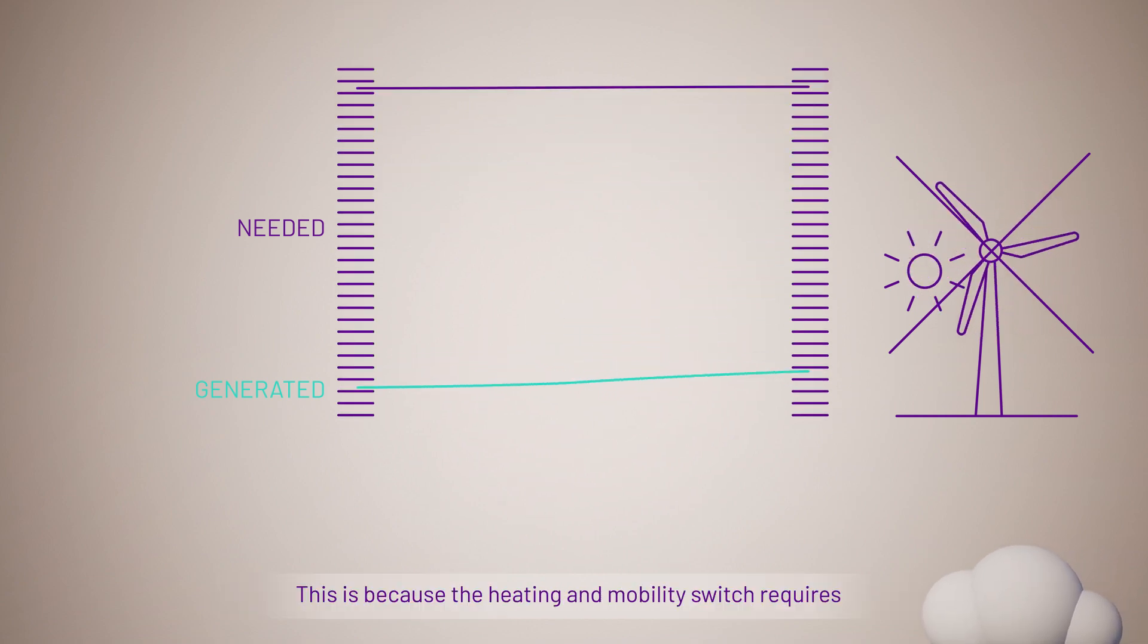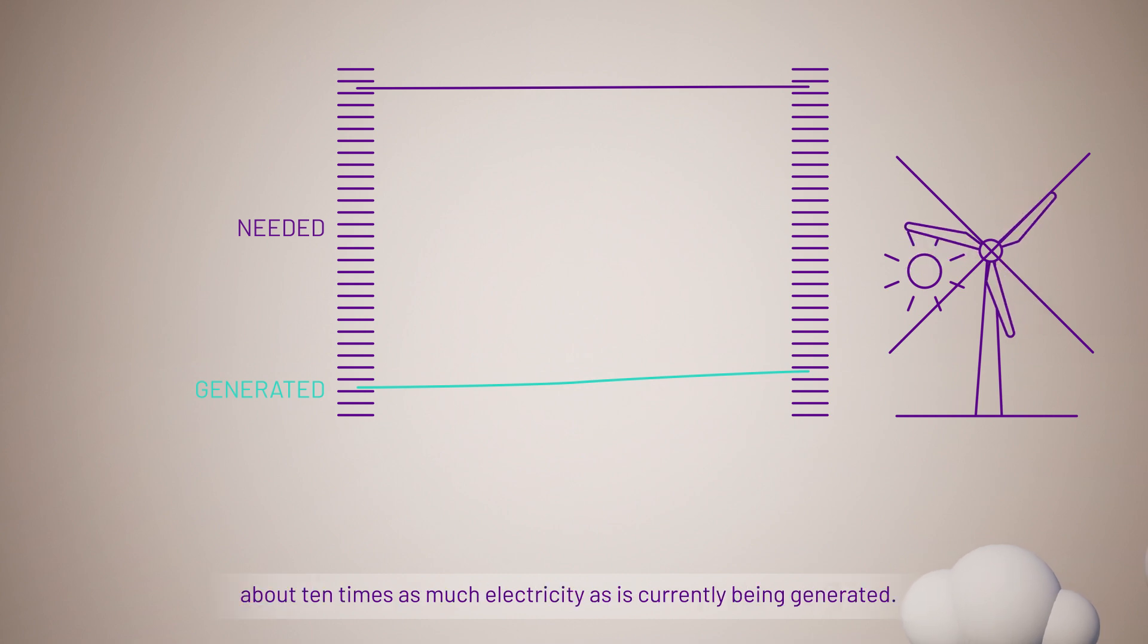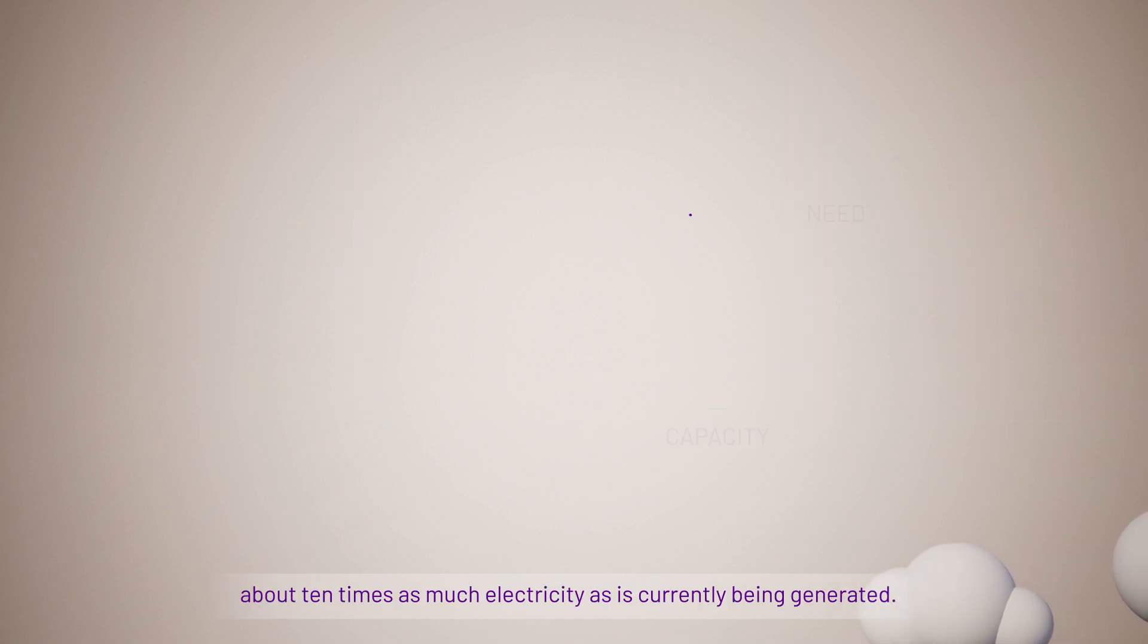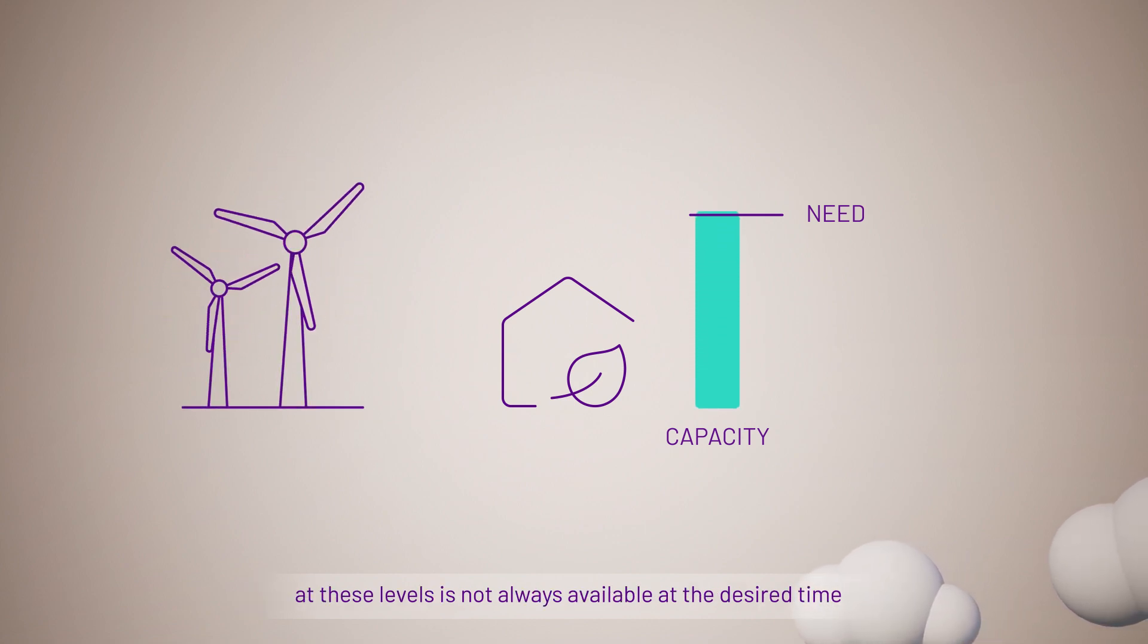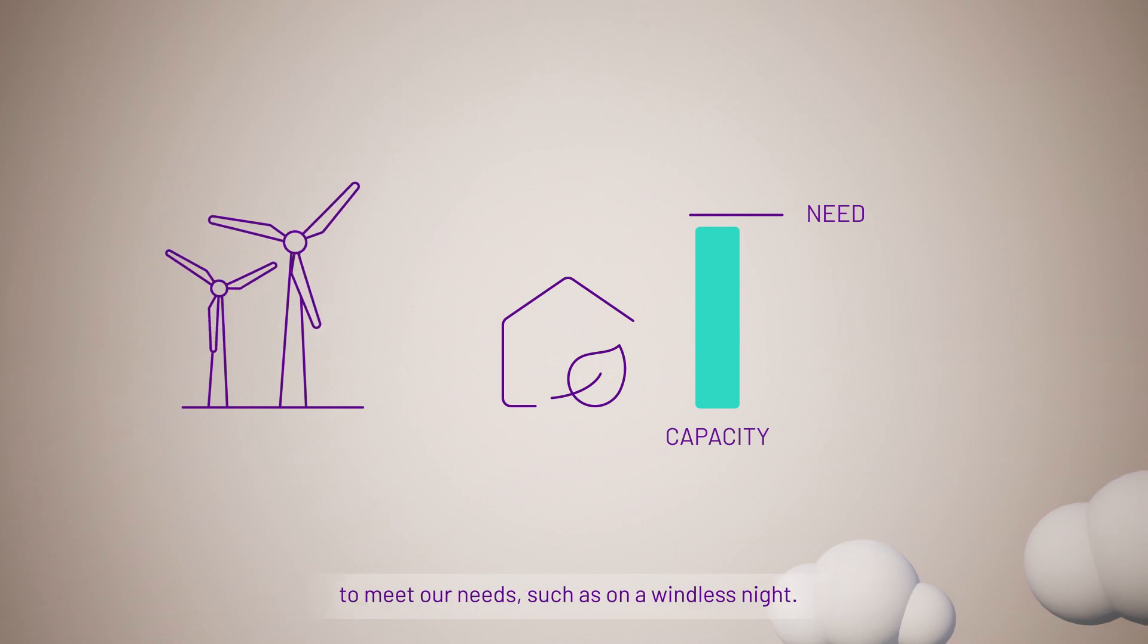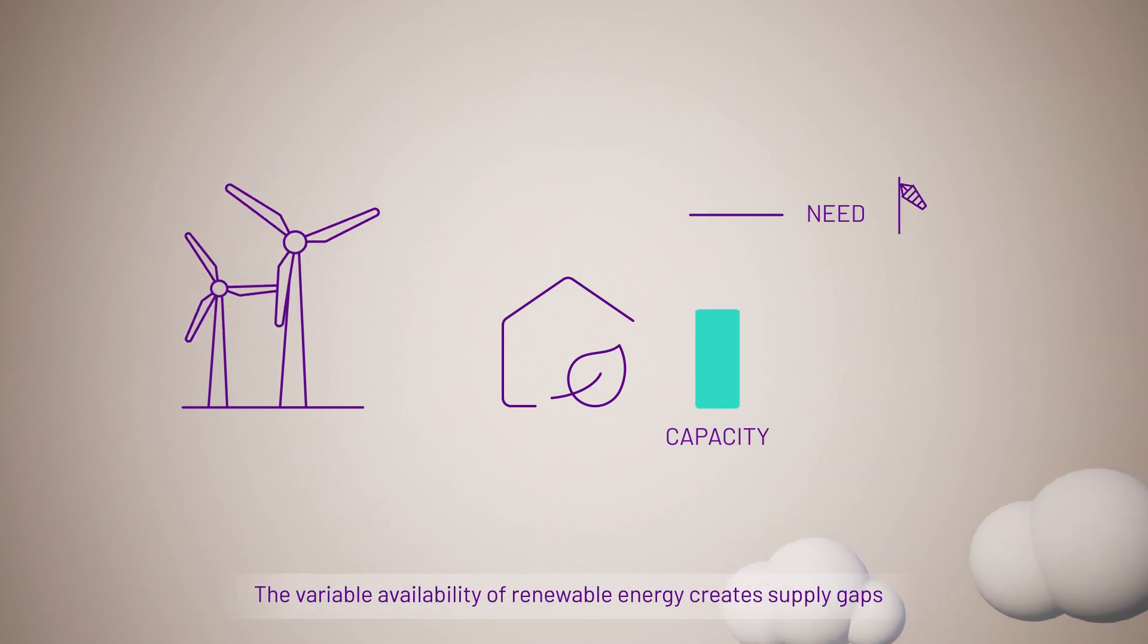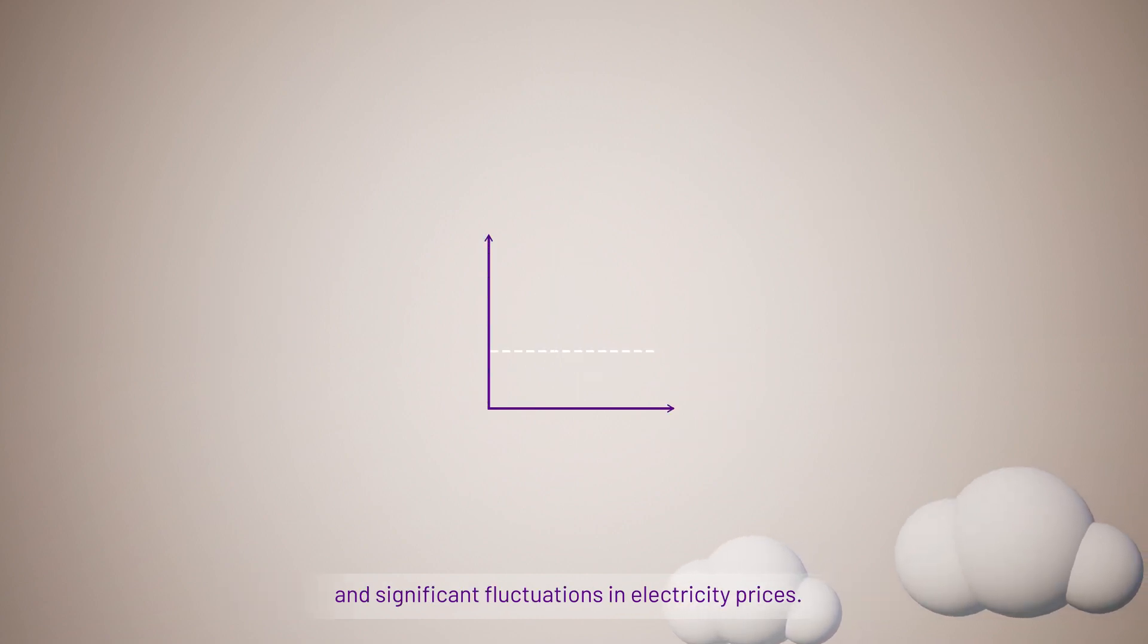This is because the heating and mobility switch requires about 10 times as much electricity as is currently being generated. However, carbon-neutral electricity from renewable sources at these levels is not always available at the desired time to meet our needs, such as on a windless night. The variable availability of renewable energy creates supply gaps and significant fluctuations in electricity prices.